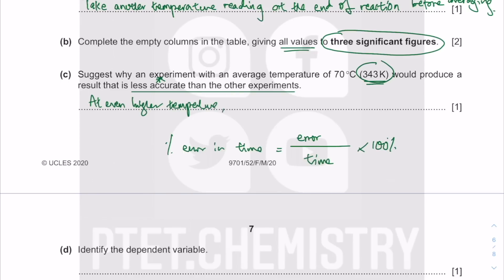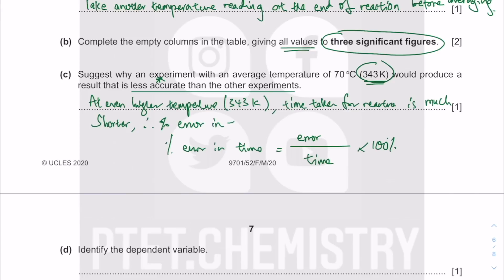At the even higher temperature of 343 K, the time taken for the reaction is much shorter, and therefore the percentage error in the time reading is going to be higher — that's why this experiment is less accurate.